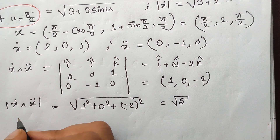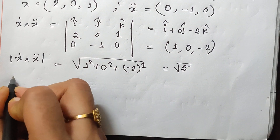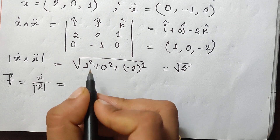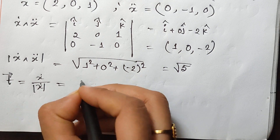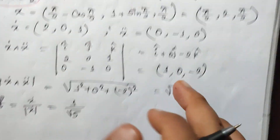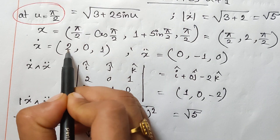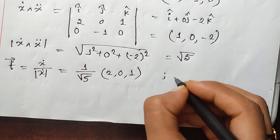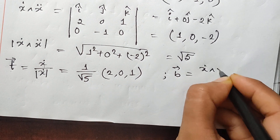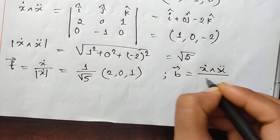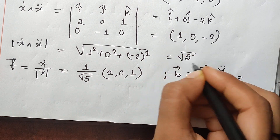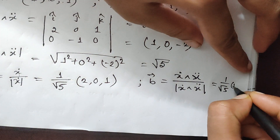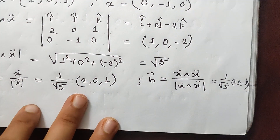This is the value of the TNB frame. So T = x dot divided by |x dot|. So x dot divided by root 5 gives the T vector. By this value of TNB: 2² plus 0². So 1 by root over 5, I am going to write: (1, 0, −2). Here: 1, 0, −2.